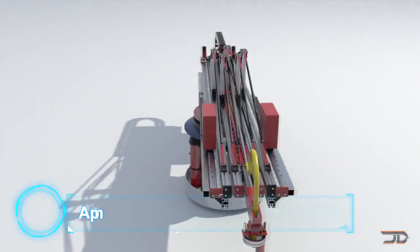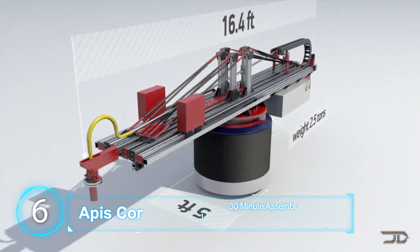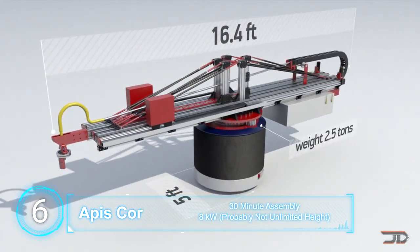At number 6, the Apis Core. This amazing printer can be transported via truck and print an entire building in 24 hours. It can be dropped on site and deployed right away after its easy assembly.